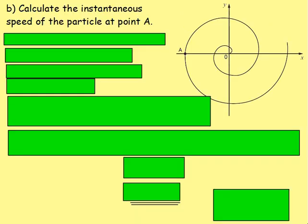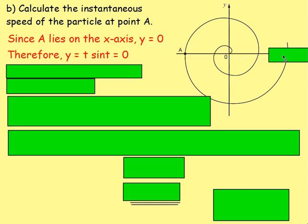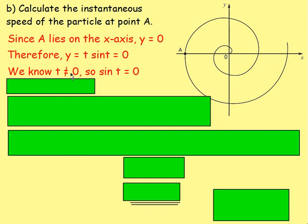For part b, we need the speed at point A shown on the diagram. Point A lies on the x-axis, so y = 0. Since y = t·sin(t), we need t·sin(t) = 0. Because t > 0 (t is not zero), sin(t) must equal zero. So we solve sin(t) = 0.